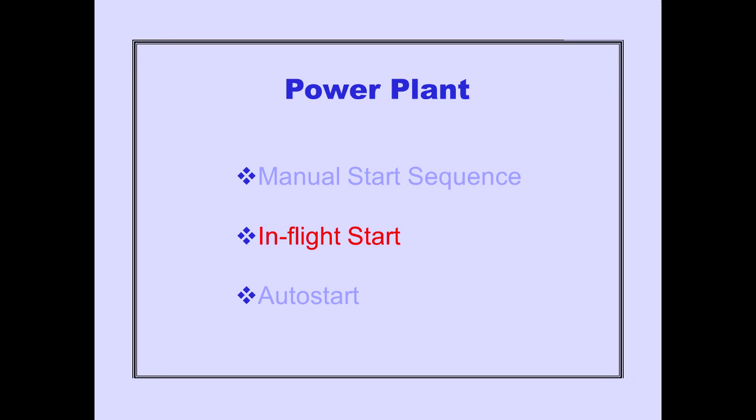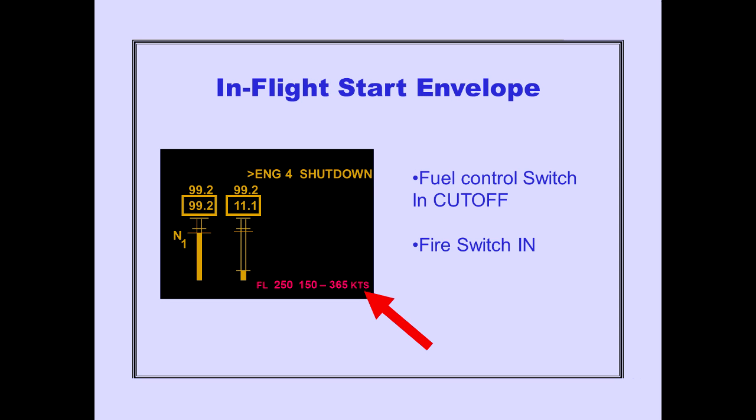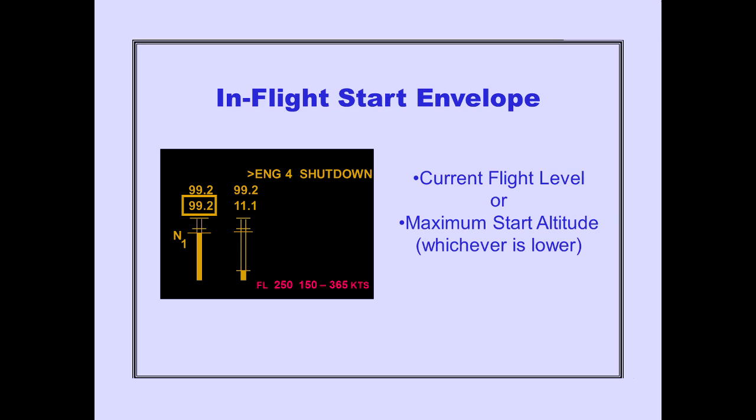Let's look at in-flight start. If an engine is shut down in-flight, the in-flight start envelope is displayed on ICAS when the fuel control switch is in cutoff and the fire switch is in. The in-flight start envelope airspeed range displayed is for the current flight level or the maximum start altitude, whichever is lower.